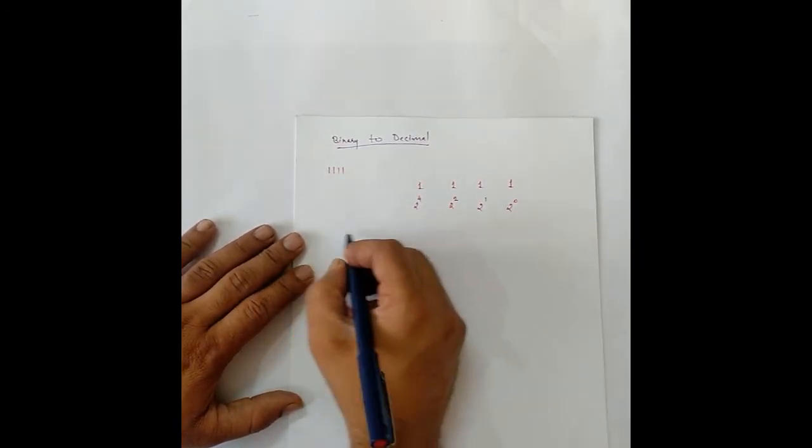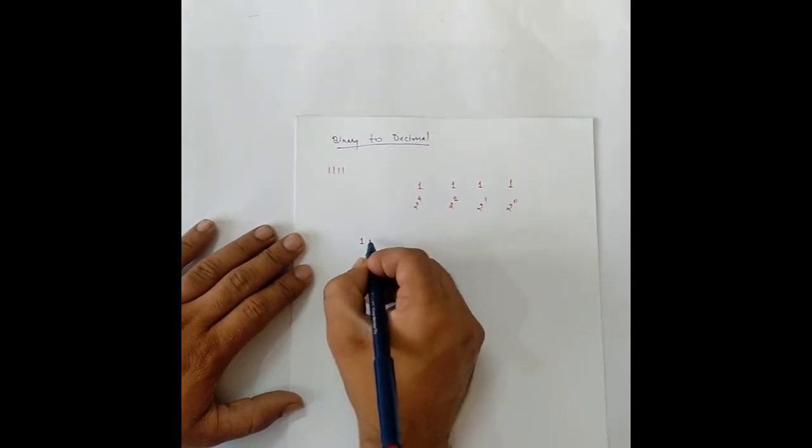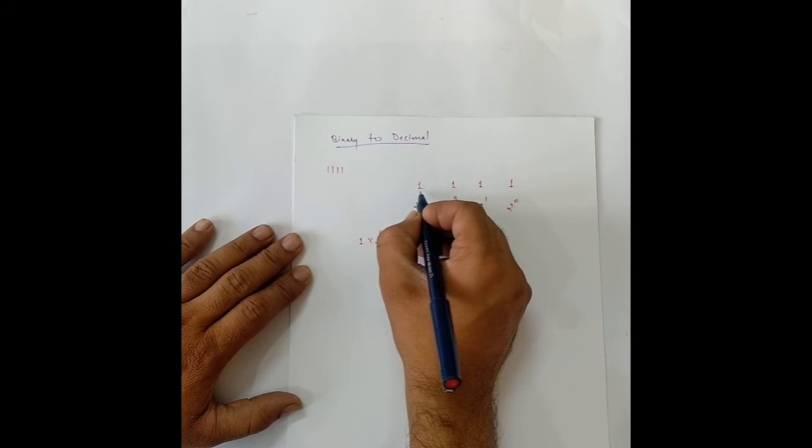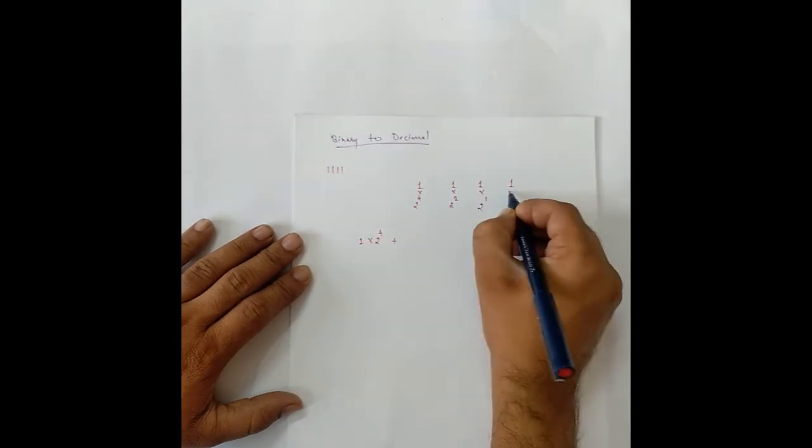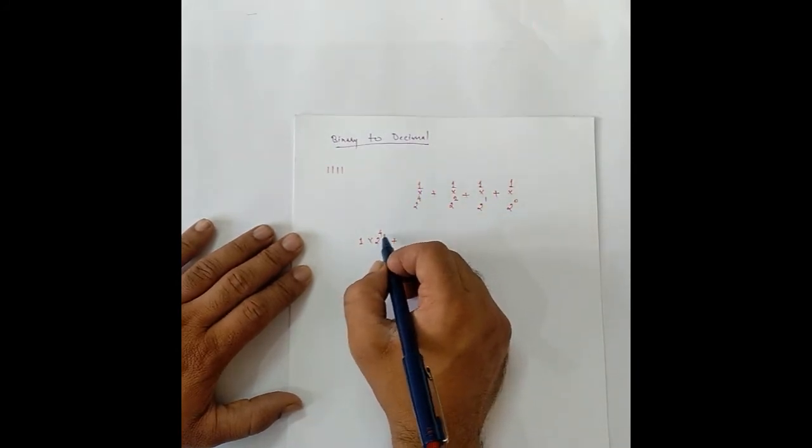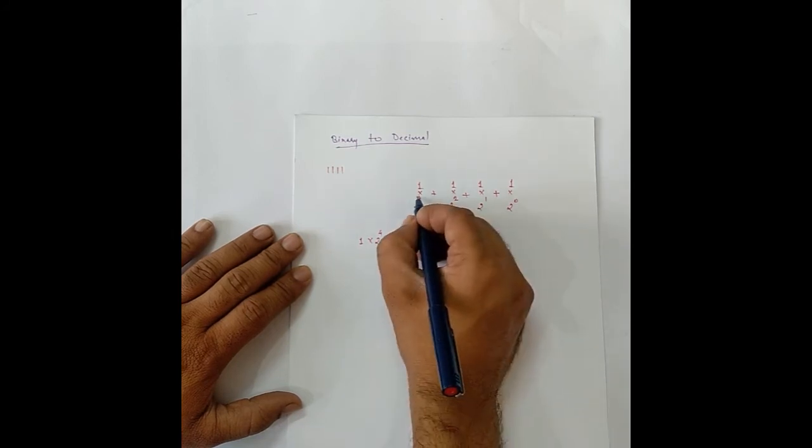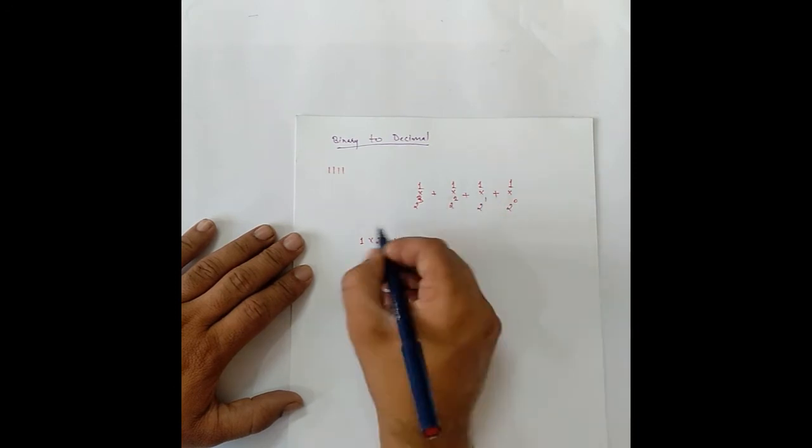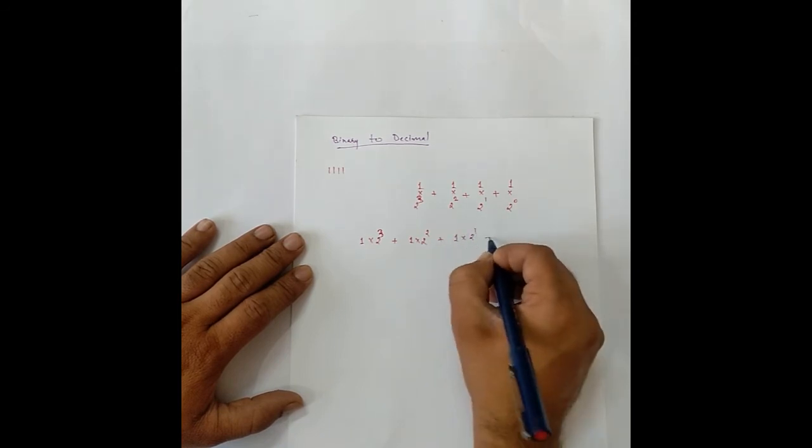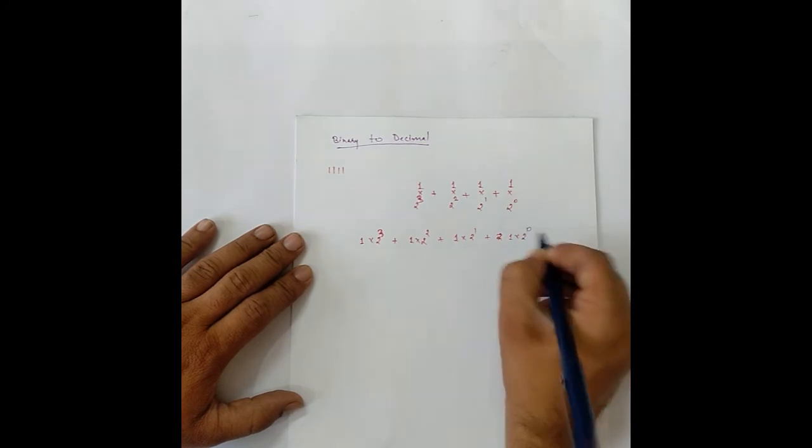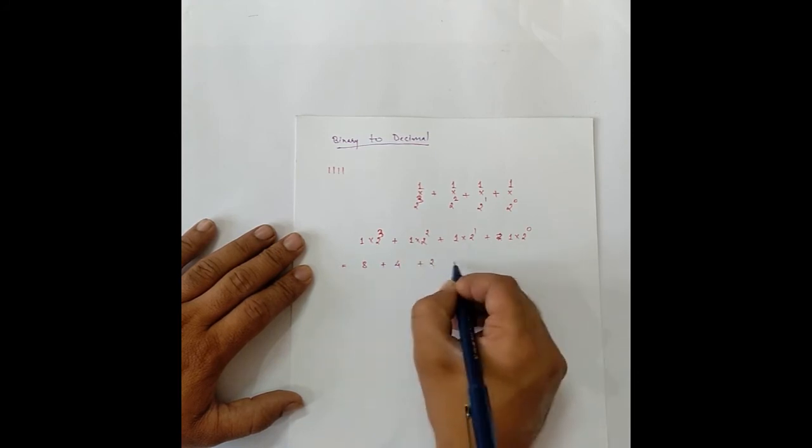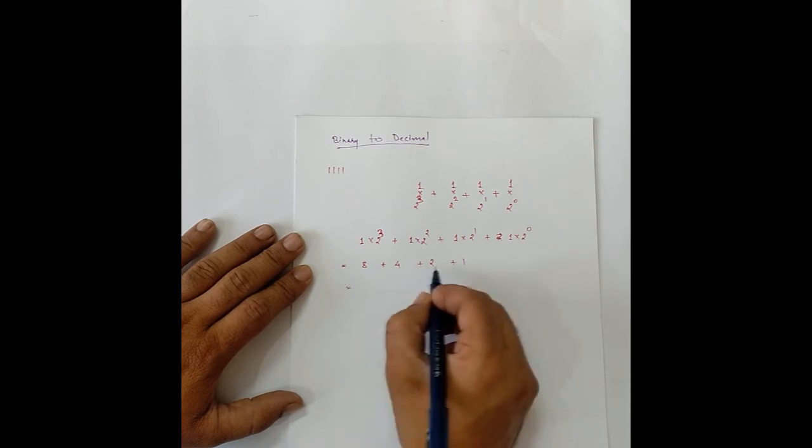What we will do now is, the decimal value is 1 multiplied by 2 to the power 4 plus, we can write this multiplied by this and the addition of all of these values. So we have 1 multiplied by 2 to the power 4, and then 1 into—sorry, this will be 3. We go in ascending order: 0, 1, 2, 3. 2 to the power 2 plus 1 into 2 to the power 1 plus 1 into 2 to the power 0. This gives us 2 to the power 3 is 8 plus 4 plus 2 plus 1. 8 plus 4 is 12 plus 2 is 14 plus 1 is 15.